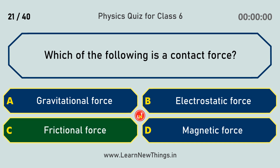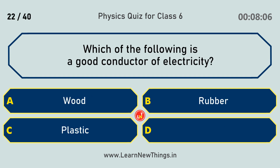Which is the product of force and displacement in the direction of the force? Work. Which of the following opposes motion between surfaces? Frictional force. Which of the following is a good conductor of electricity? Iron.